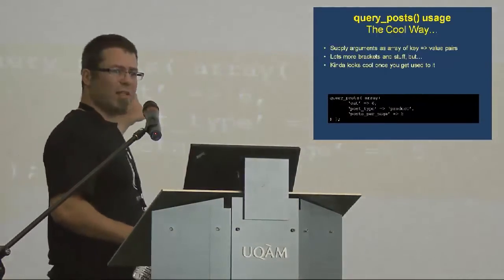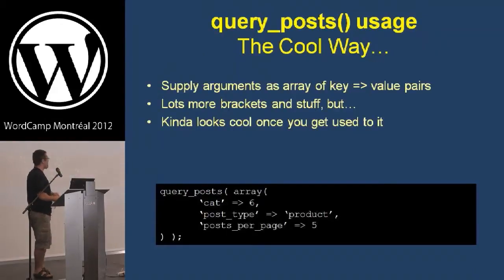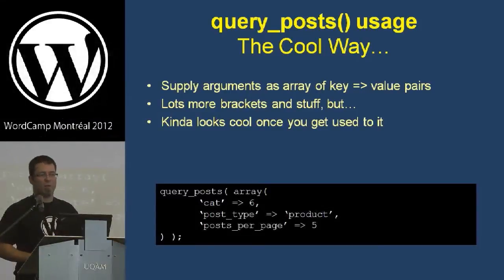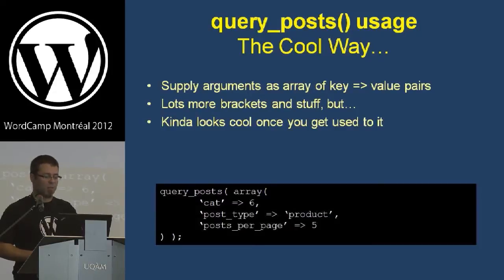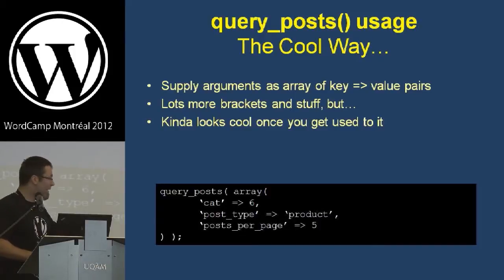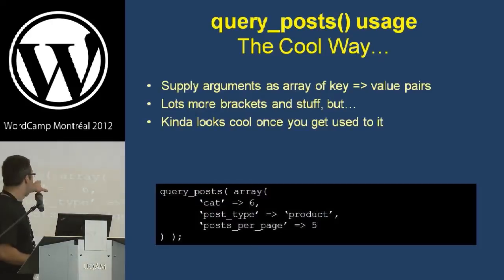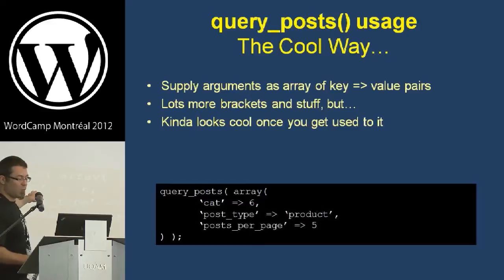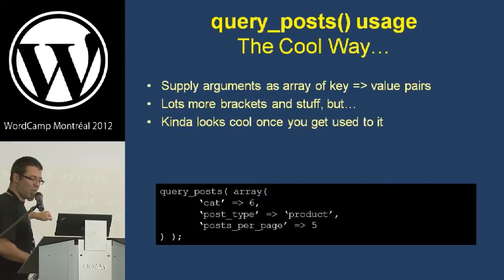The modern format uses an array instead of a string. I've got the exact same query but this time passing an array of key-value pairs, which makes it really easy to understand what we're customizing. So in this case: the category ID, the post type set to 'product', and then how many posts per page. If you look up WP_Query or query_posts on the Codex you'll find more documentation on this.